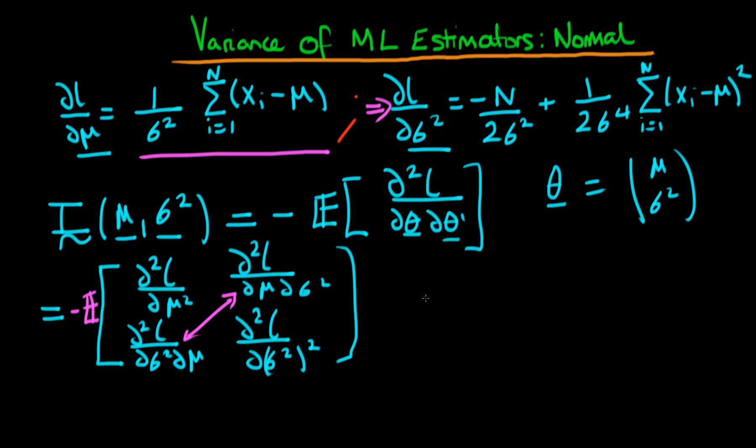So how can we actually go ahead and estimate the information matrix in this particular circumstance? Well, it turns out that if we use our maximum likelihood estimators of mu and in this case sigma squared, so mu hat and sigma squared hat.